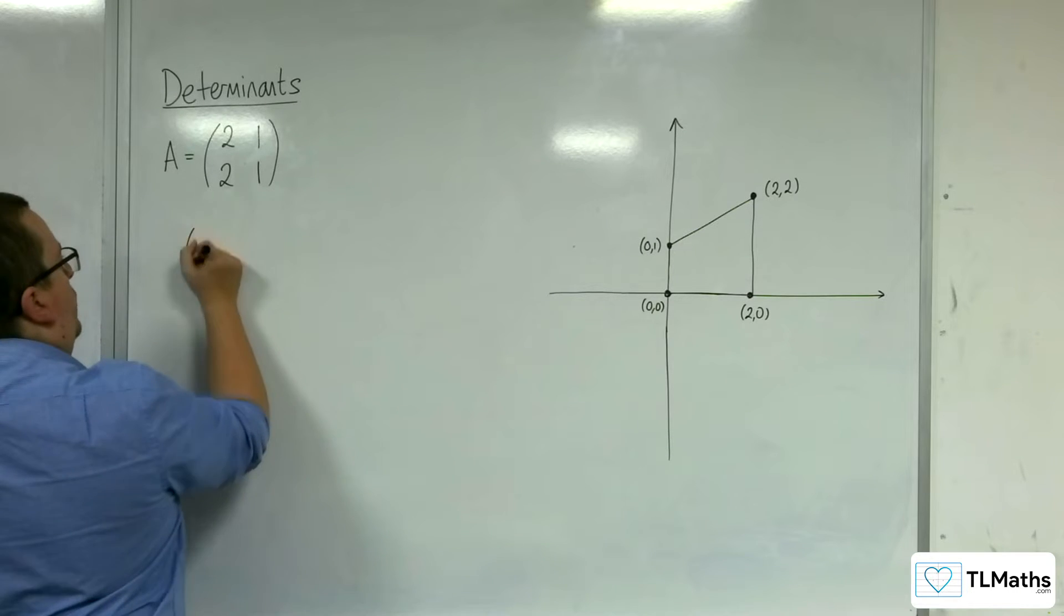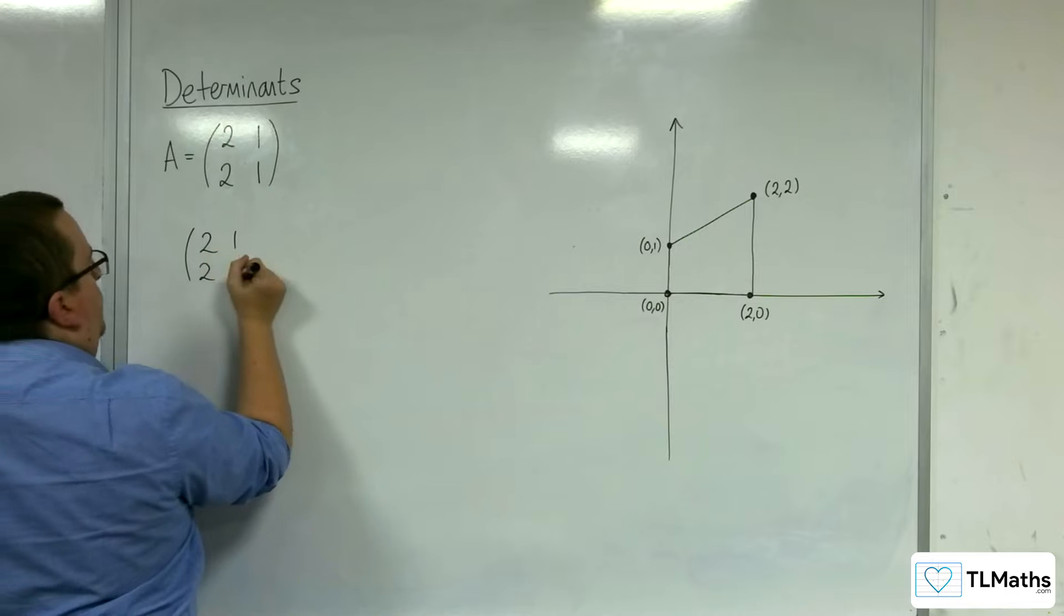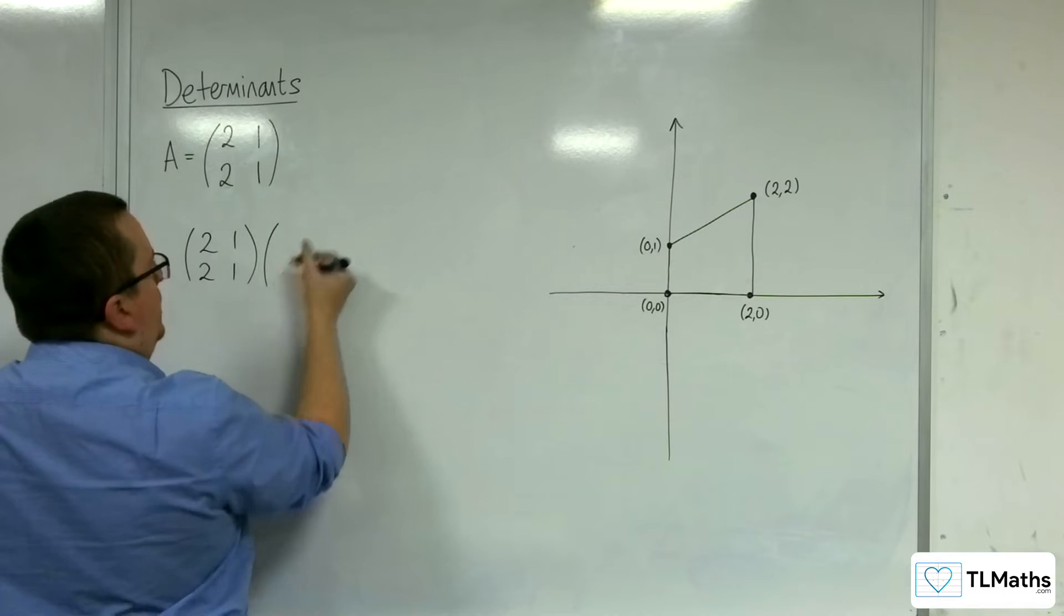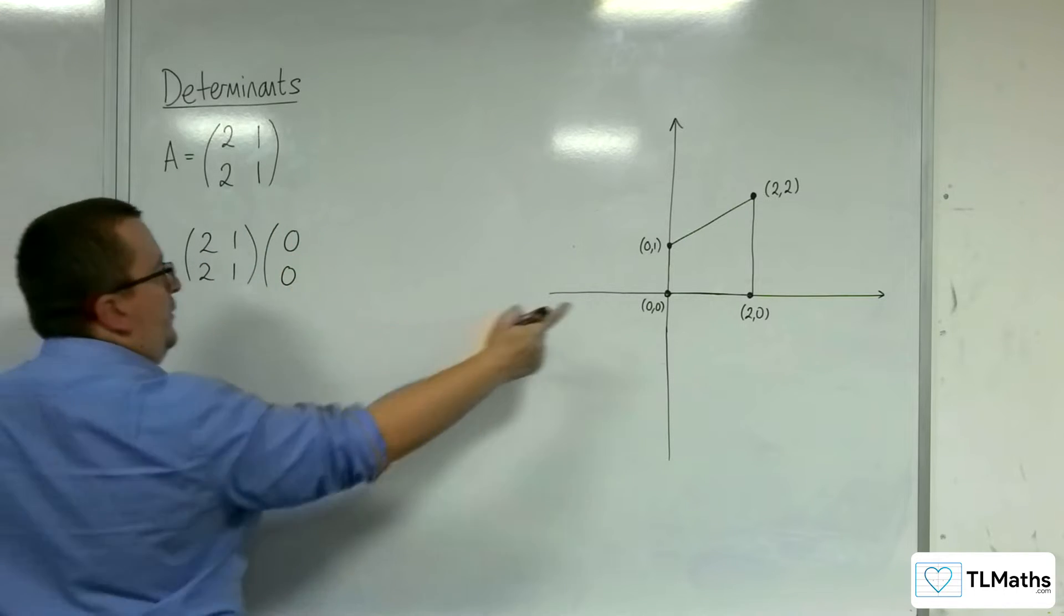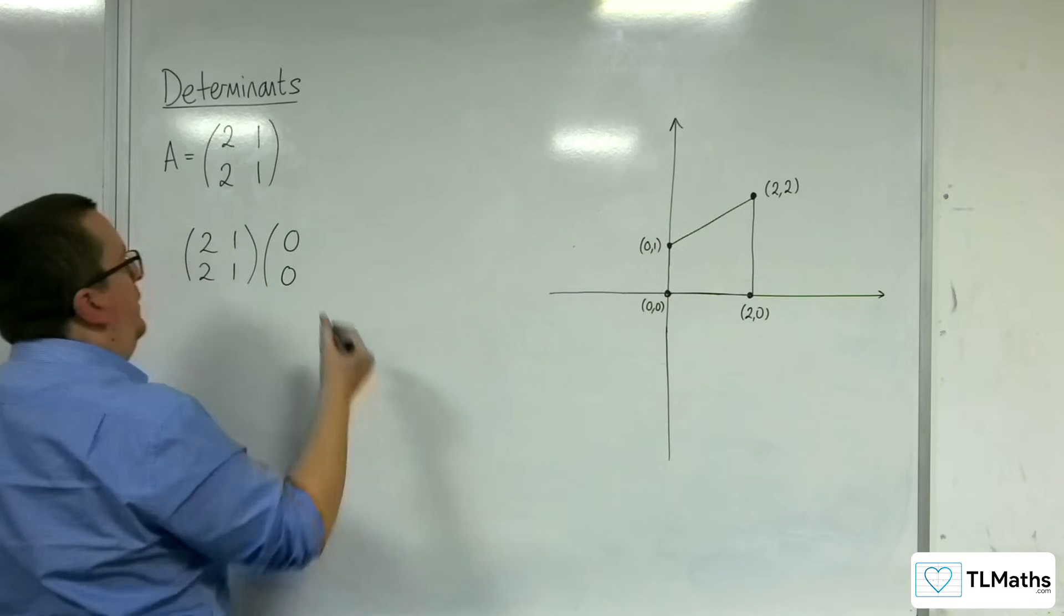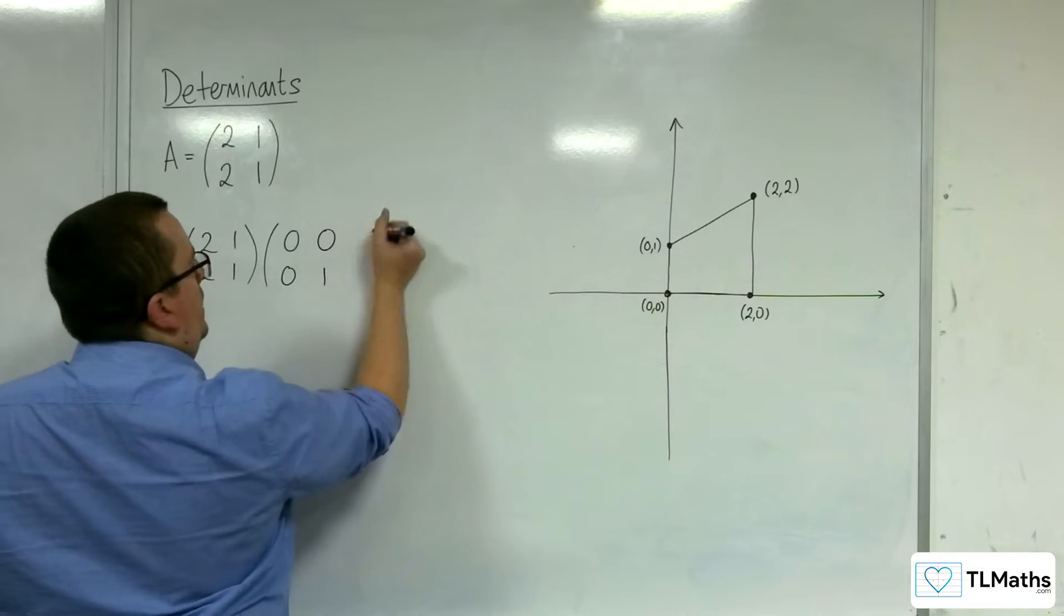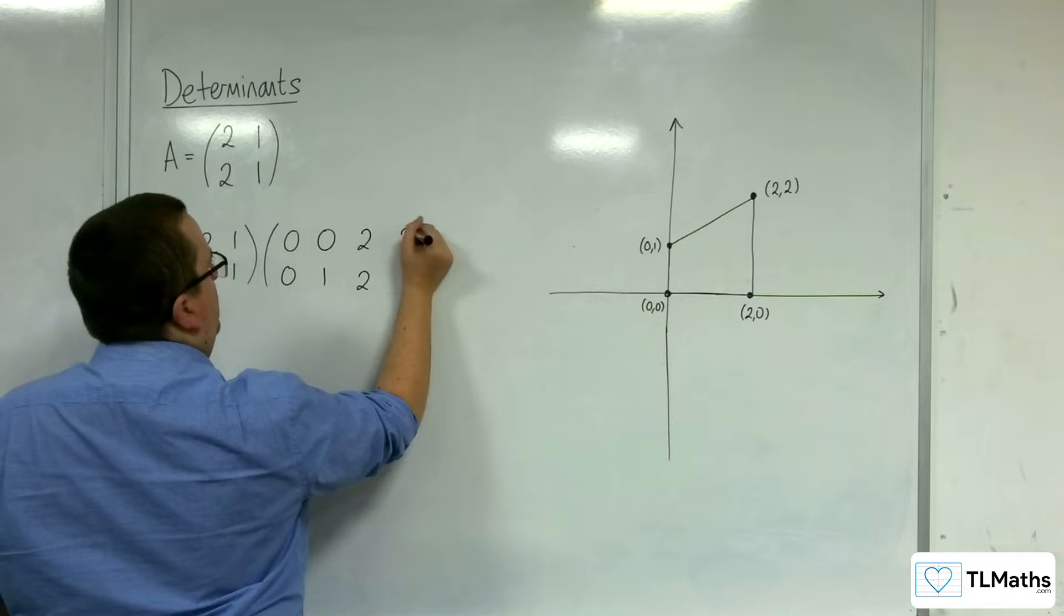So, we've got 2, 1, 2, 1 being applied to, let's start with 0, 0, work our way round clockwise. So then 0, 1, 2, 2, and then 2, 0.